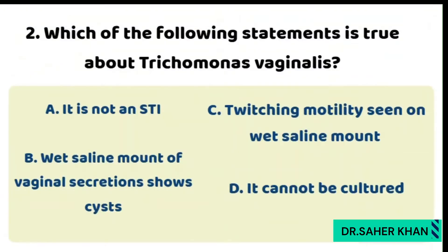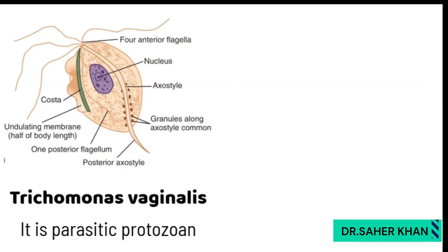The second question is: which of the following statements is true about Trichomonas vaginalis? Option 1: it is not a sexually transmitted infection. Option 2: wet saline mount of vaginal secretions shows cysts. Option 3: twitching motility seen on wet saline mount. Option 4: it cannot be cultured.